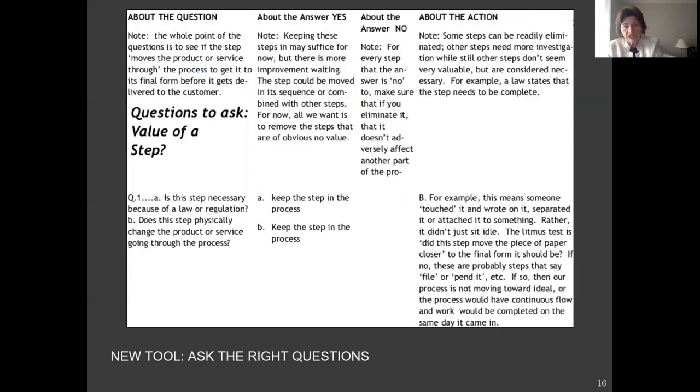This is the questions, the right questions to ask. I know it's small, but in the first column, you would ask this question about each step. You get an answer, what to do for yes, answer what to do for no, and about what the action is. Skylar, would you please just read a part of that? Does this step physically change the product or service going through the process? Keep the step in the process. For example, this means someone touched it and wrote on it, separated it, or attached it to something, not that it just sat idle. That's great. It gives you a flavor of how we standardize this activity.